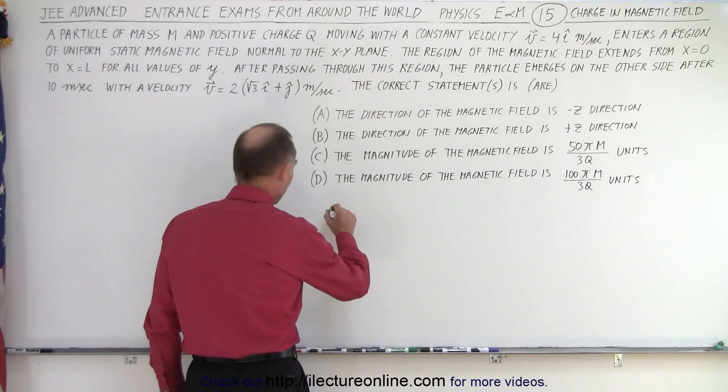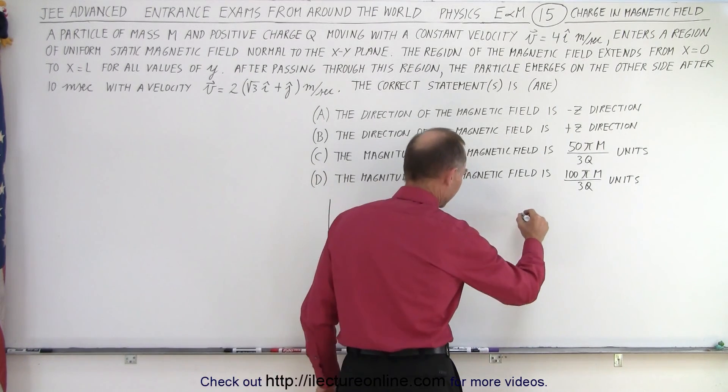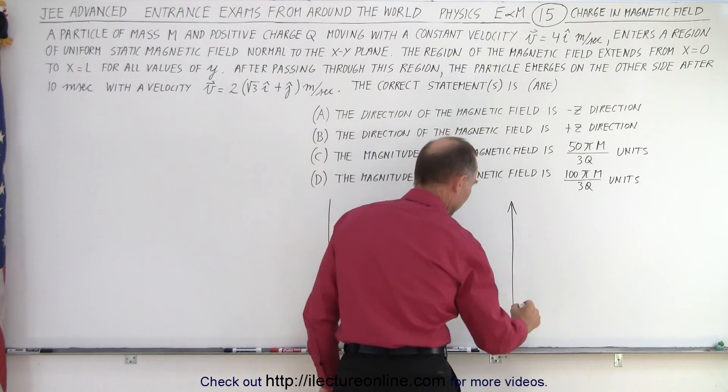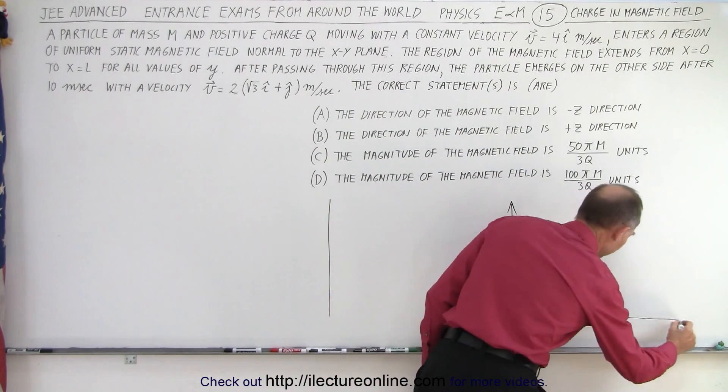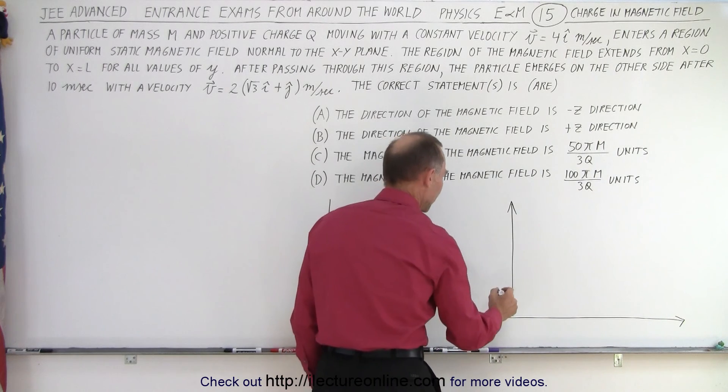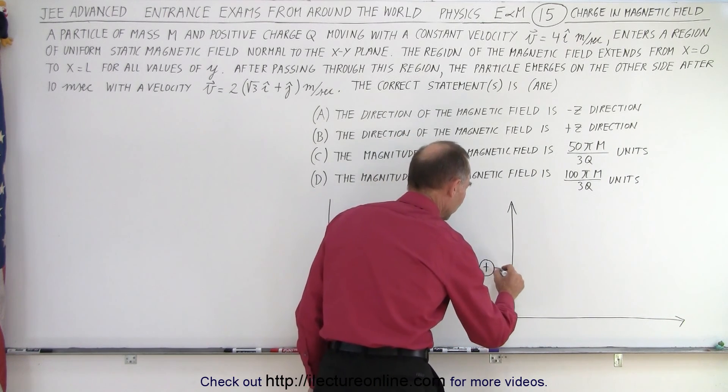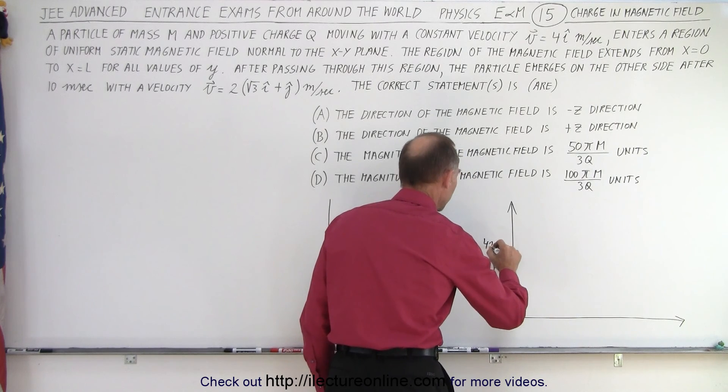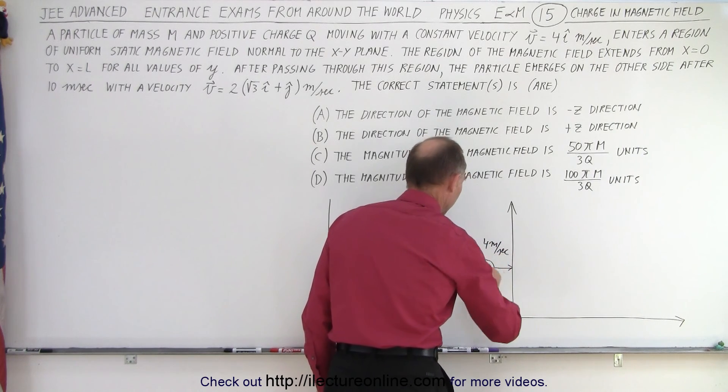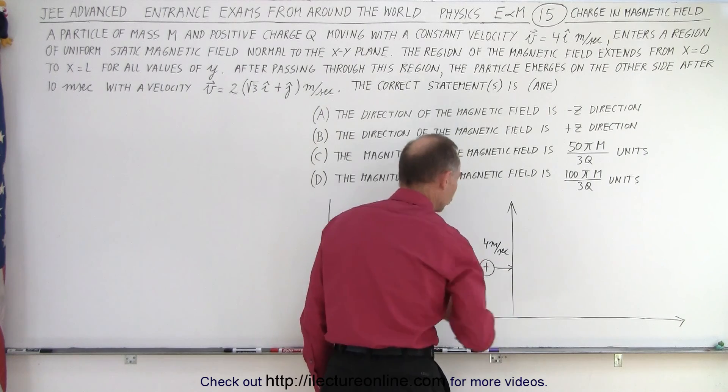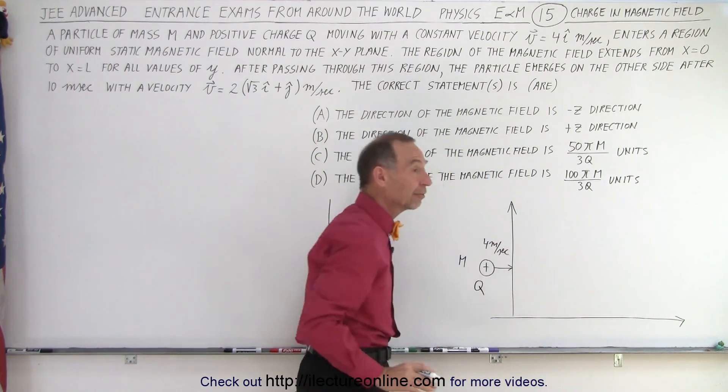First of all we'll draw the y-axis and let me move over here so that gives us some more room to work with. Here's the y-axis, here's the x-axis. Notice that a particle is moving, so let's say we have a positive particle moving with a velocity of 4 meters per second. It has mass m and charge q and it enters a magnetic field.